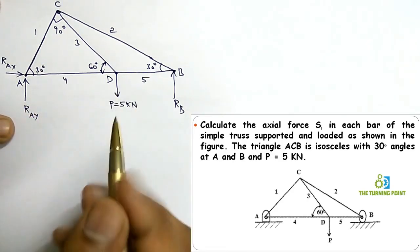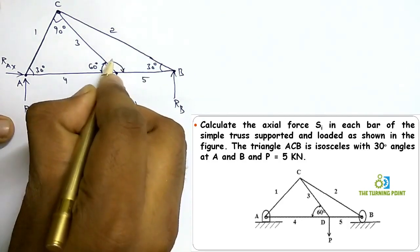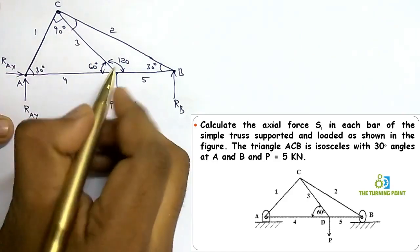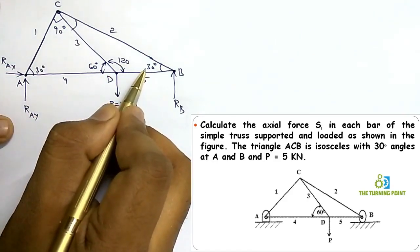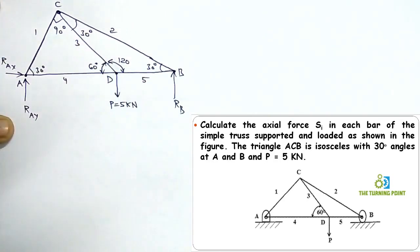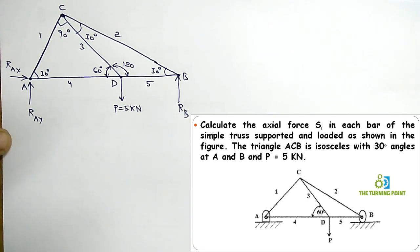Since angle C is 90 degrees, the angle in a straight line is 180 degrees, so the supplementary angle is 120 degrees. Then 120 plus 30 equals 150, and 180 minus 150 gives 30 degrees. Now all the angles have been calculated. In the method of joints, you use only two equations: sigma Fx = 0 and sigma Fy = 0.